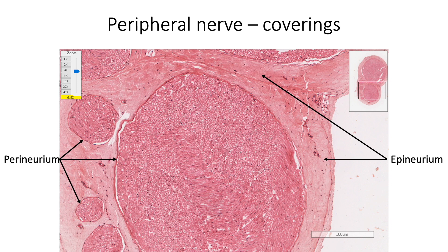Endoneurium is the intrafascicular connective tissue which covers individual nerve fibers and endoneurial vessels. It cannot be seen distinctly in routine histology sections.